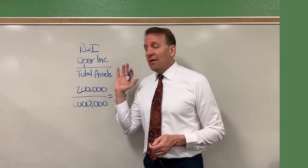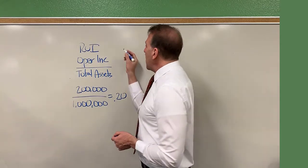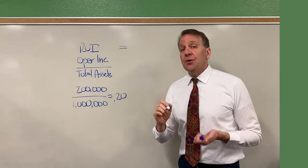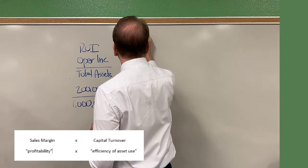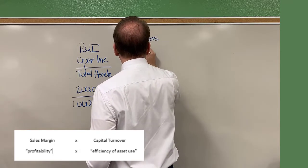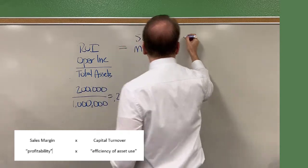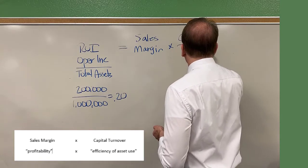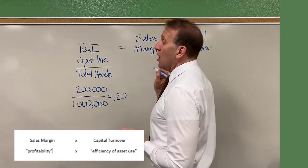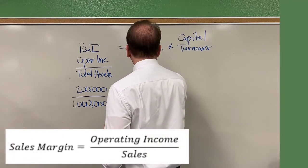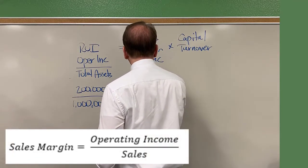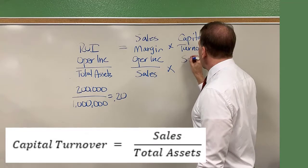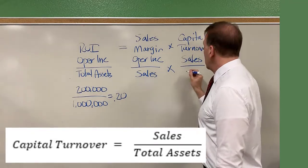This is a very good ratio, but we can actually break it down into two other ratios for further analysis. These two ratios are called the sales margin and the capital turnover. Sales margin is your operating income divided by your sales for that time period.